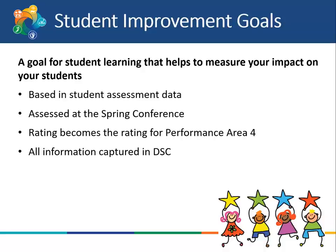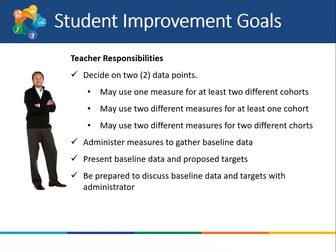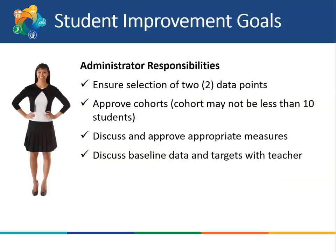All information for student improvement goals is captured in the DSC. The teacher's role is to first decide on the two data points to be used in the goals. The teacher may use one measure for at least two different cohorts, may use two different measures for at least one cohort, or may use two different measures for two different cohorts. The teacher is then responsible to administer the measures to gather baseline data, present the baseline data and proposed targets, and be prepared to discuss them with their administrator. The administrator's responsibilities include ensuring the selection of at least two data points, approving the cohorts (which may not be less than 10 students), approving the appropriate measures, and discussing the baseline data and targets with the teacher.